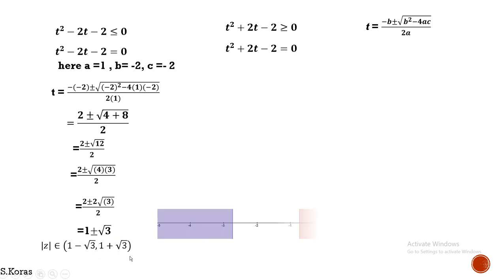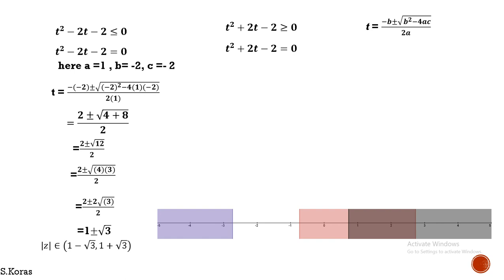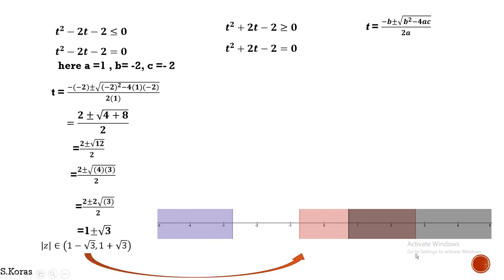Plotting on a number line: √3 ≈ 1.732, so 1 − √3 ≈ −0.732, which lies on the negative side, and 1 + √3 ≈ 2.732, which lies between 2 and 3. So −0.732 is here and +2.732 is here. This is 1 − √3 and this is 1 + √3. The value lies between these two points in this closed interval. Case 1 is done.